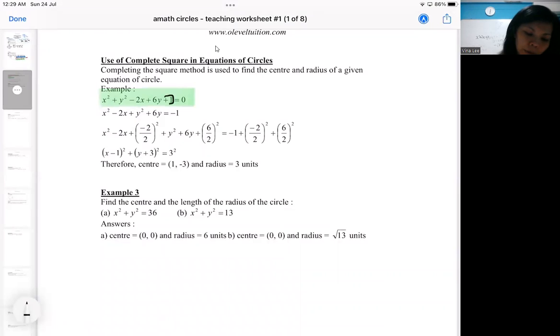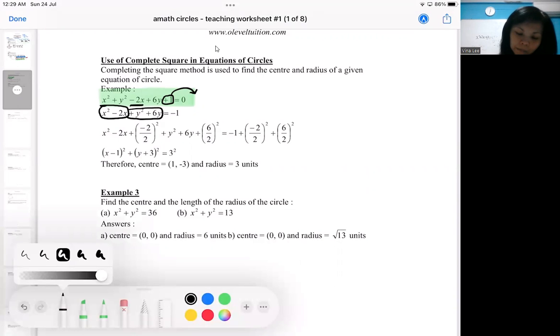The first step, you will bring the constant over. After you bring the constant over, you group the x together. So there will be an x family. You also group the y together after you shift the constant over. And then you're going to do complete square twice. You're going to complete square for the x family and complete square for the y family.